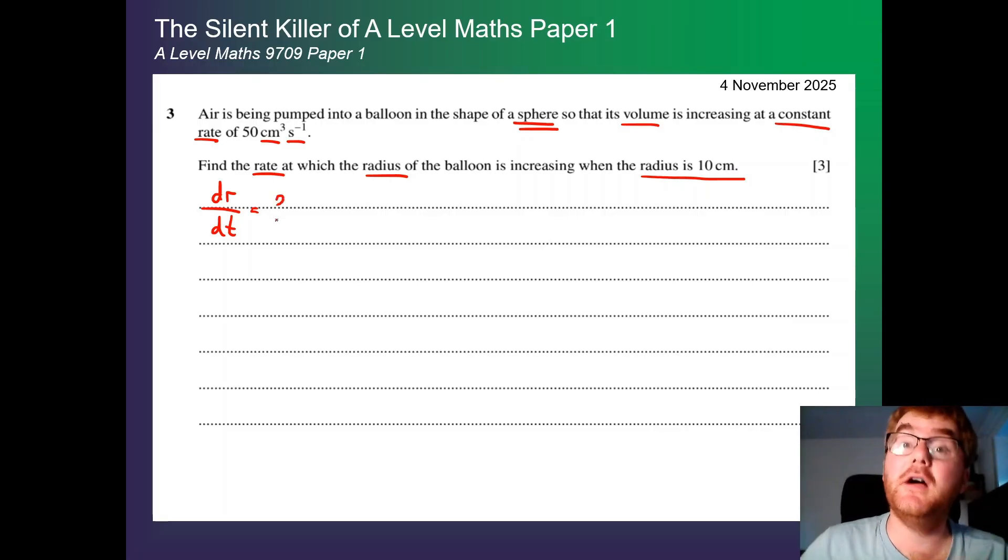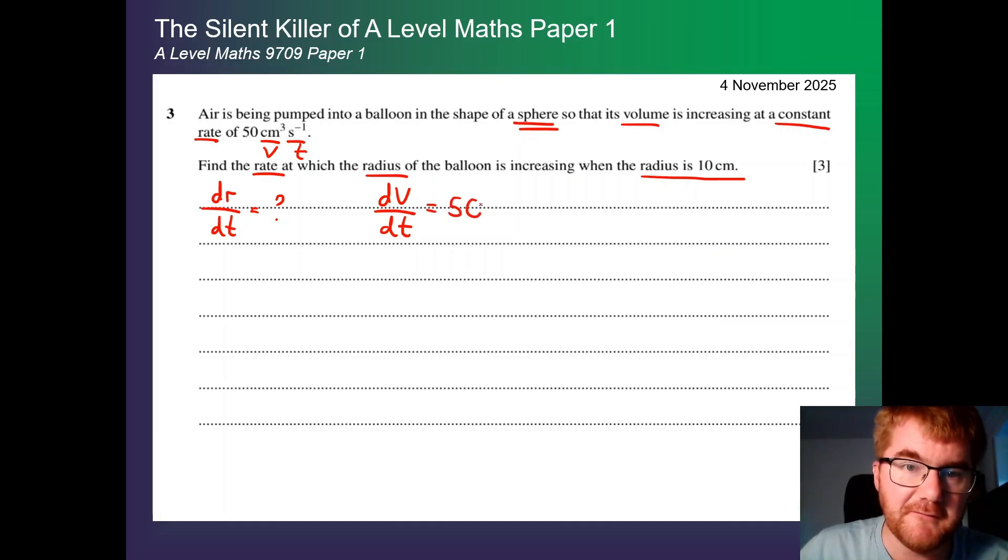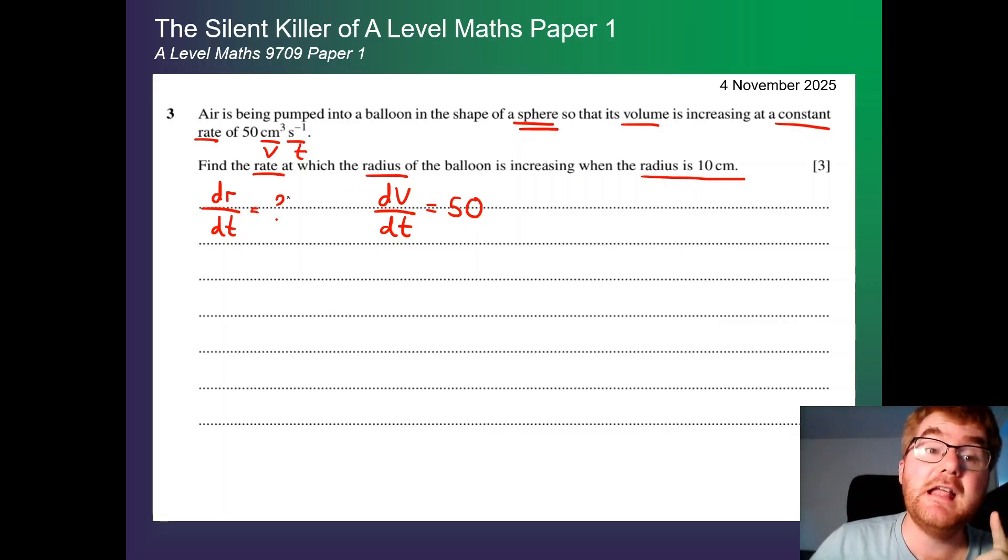Then we have to think about what information we have. We're increasing at 50 cubic centimeters per second. Well, cubic centimeters, that's a volume, and seconds is time. So actually, we've got dv by dt, the change of volume with respect to time. So that's going to be equal to 50. Now we have to think about what would be very useful to have in order to connect these two things together.